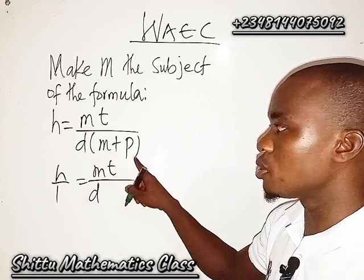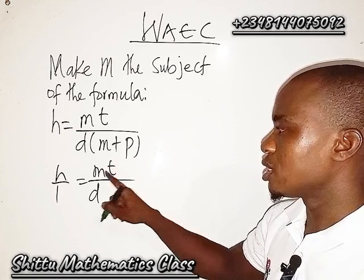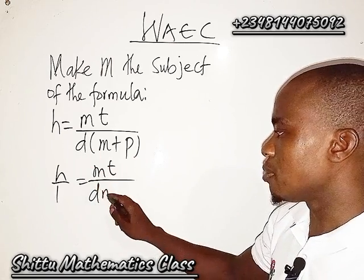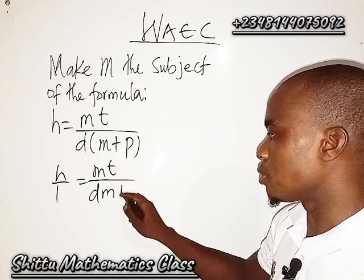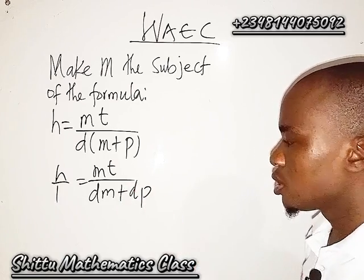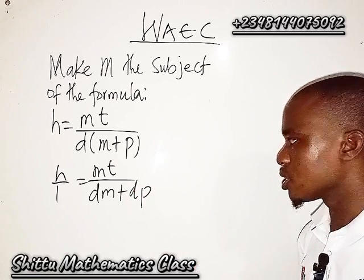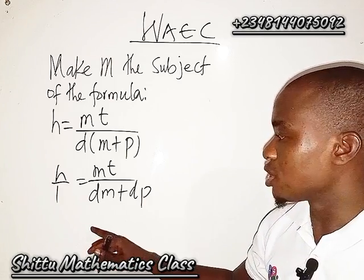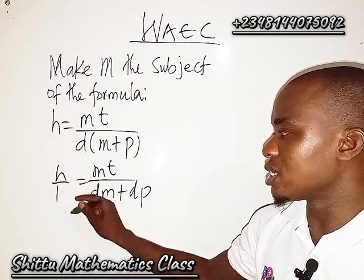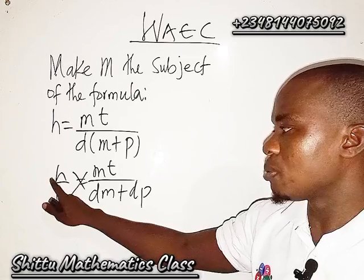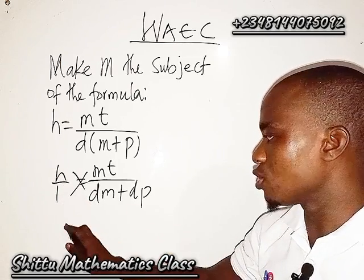I can open the bracket here. So this is going to be dm, then d times this, I'm going to have dp. The next thing we are going to do is cross multiplication by multiplying this by this.